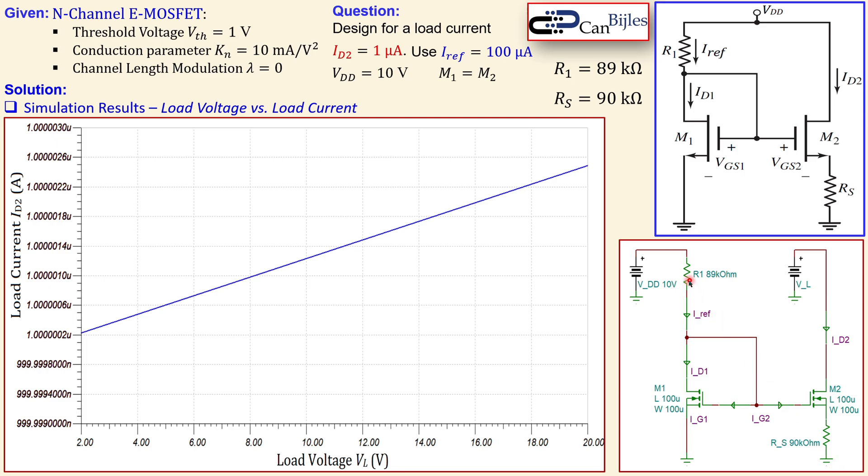You don't have to go all the way to mega or giga ohms, for example. Alright guys, this is our example number two about the Widlar current source, but now using the MOSFETs, enhancement N-channel MOSFETs.